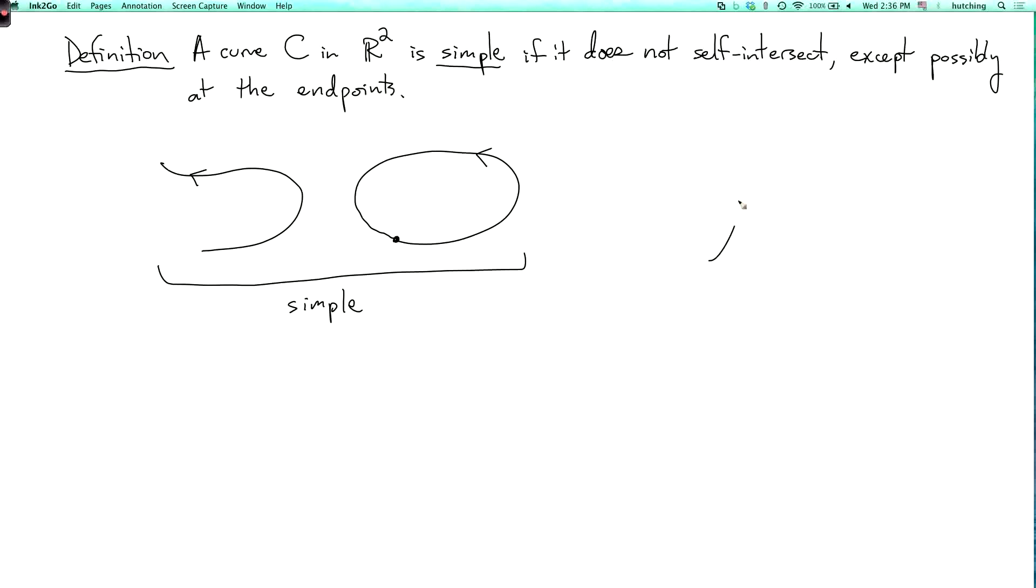But a curve that crosses itself like this, so here it crosses itself, so it's not simple. This is also not simple. These are not simple.